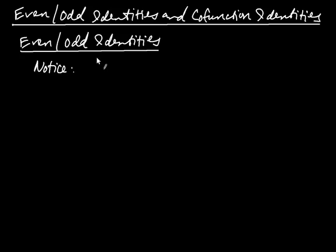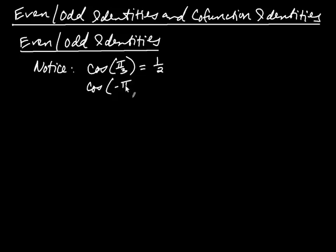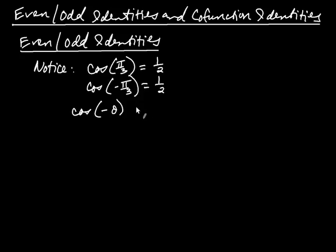If you take cosine of pi over 3, that's equal to one-half. But it's also true that cosine of negative pi over 3 is equal to one-half as well. And that's true for any angle — cosine of the negative of an angle is the same thing as cosine of just that angle.